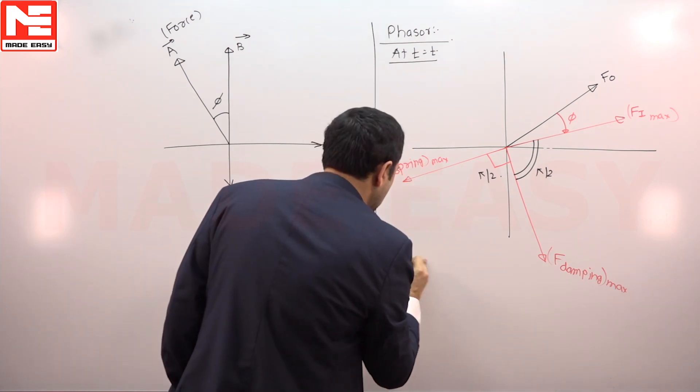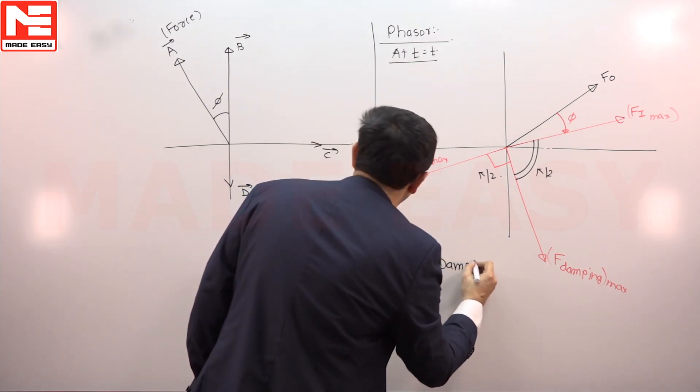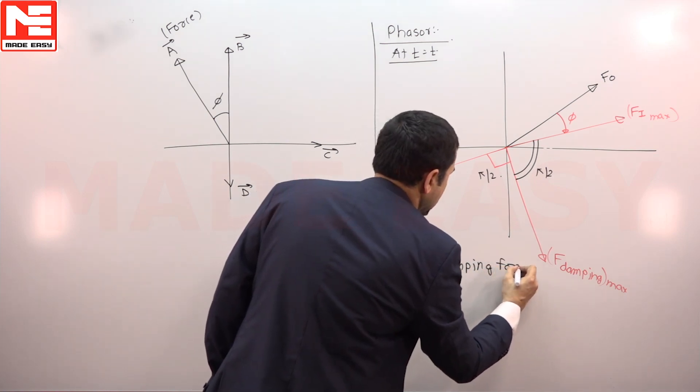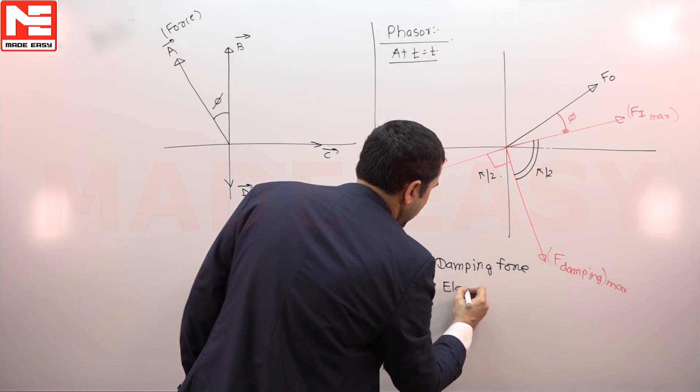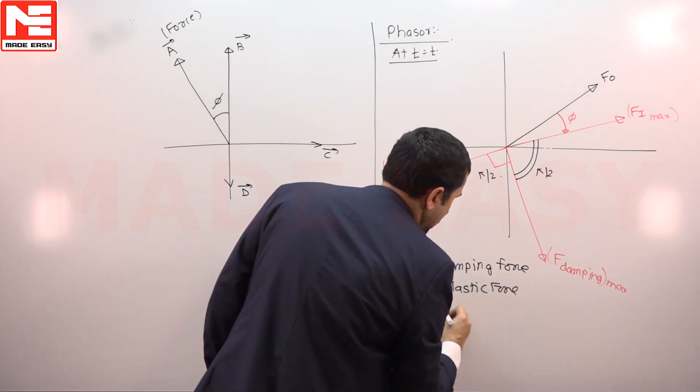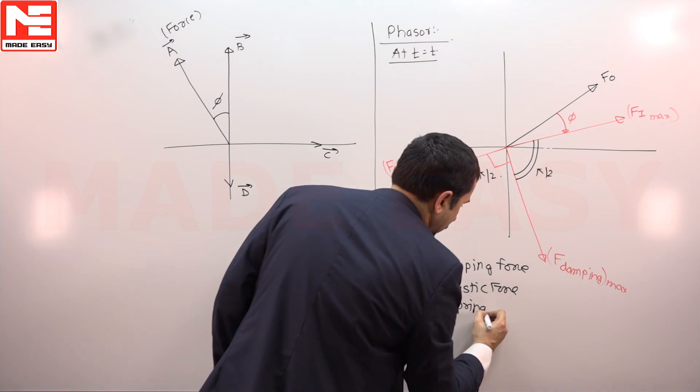Vector c is the damping force and vector d is the spring or elastic force, because spring forces are also known as elastic forces.